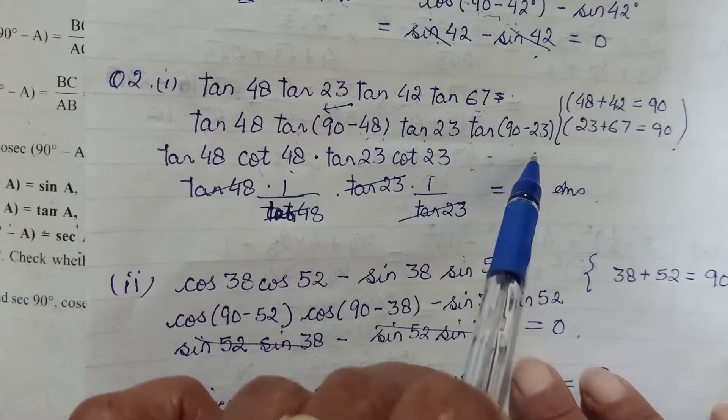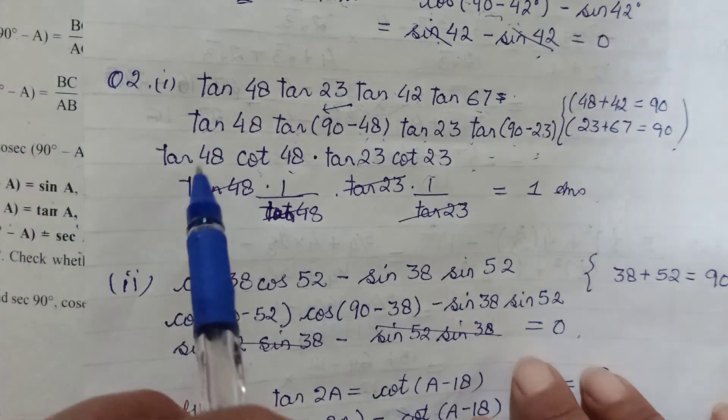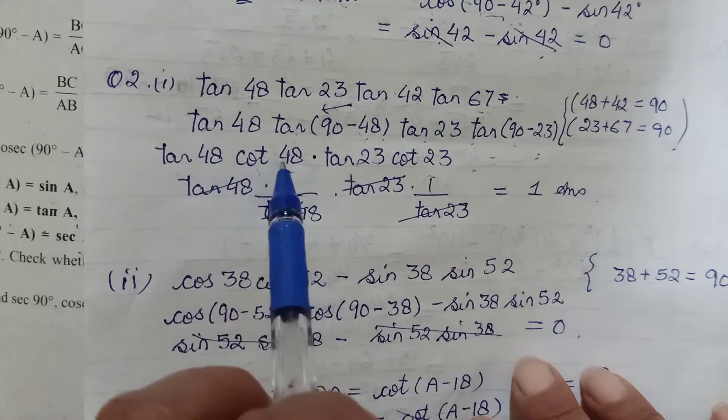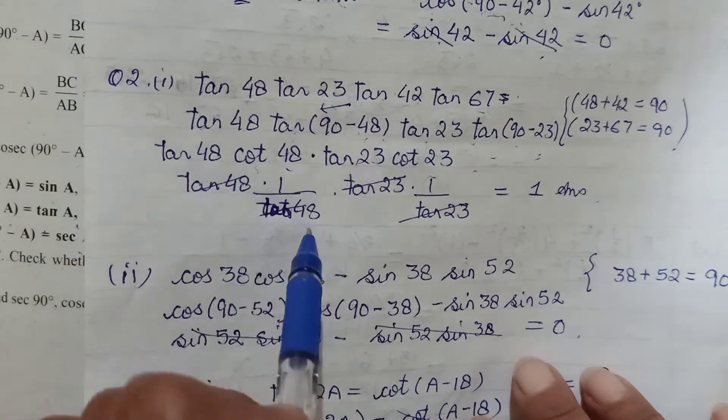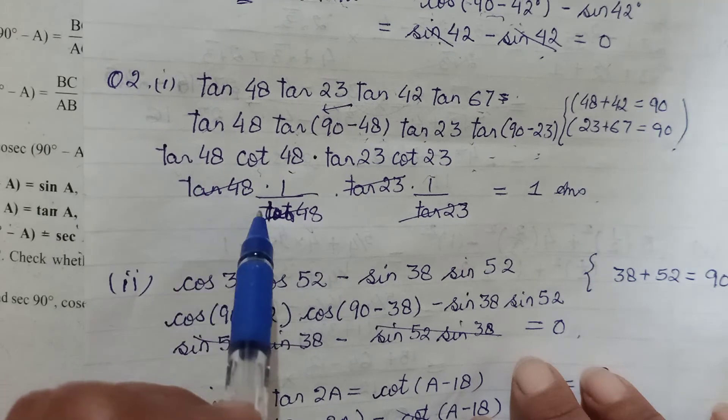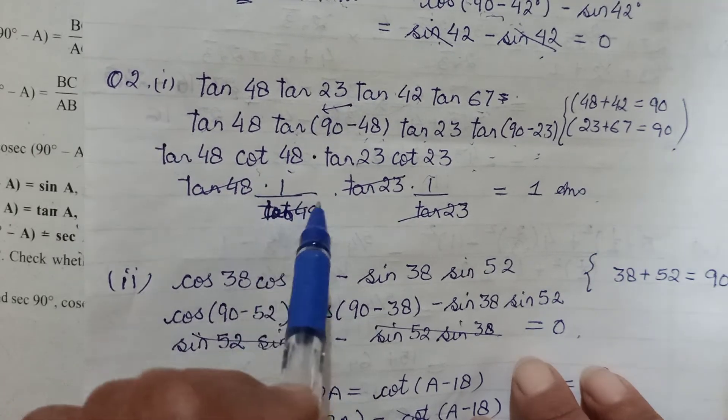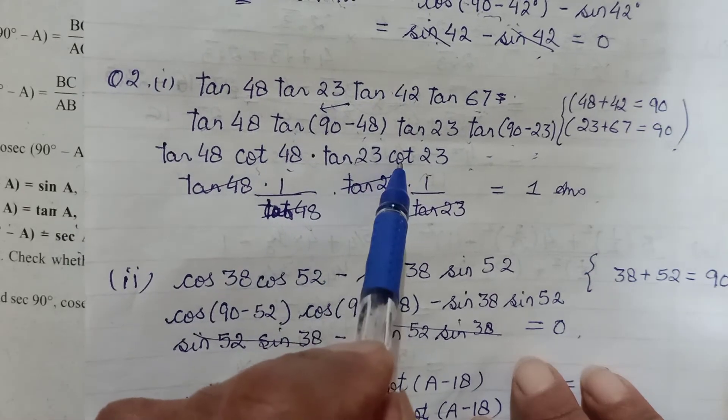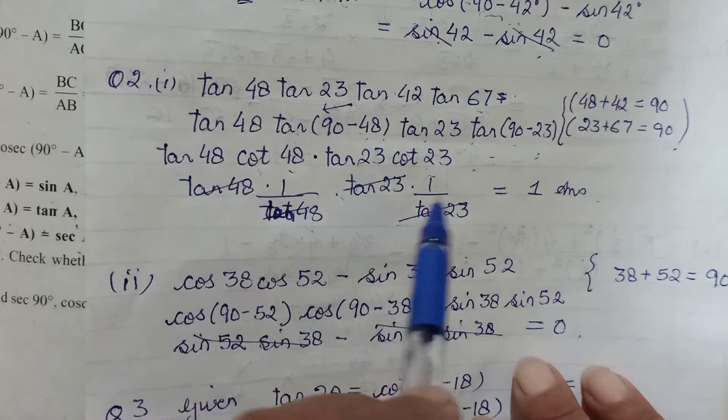Because of those formulas that we have just discussed. Now tan and cot are reciprocal of each other, so tan into cot actually becomes one. Why? Because cot is one upon tan, so tan and tan gets cancelled. So I have shown the working here: tan 48, cot 48 is one upon tan 48, will cancel out. Tan 23 and cot theta is one upon tan theta, so same theta will cancel. You're left with one.